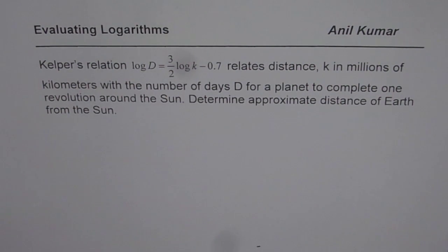Kepler's relation log D equals 3 over 2 log k minus 0.7 relates distance k in millions of kilometers with the number of days D for a planet to complete one revolution around the sun. Determine approximate distance of Earth from sun.